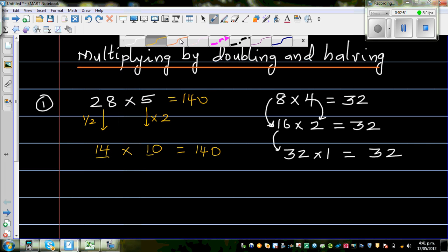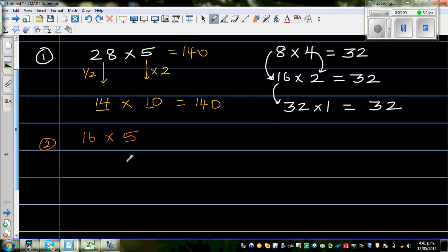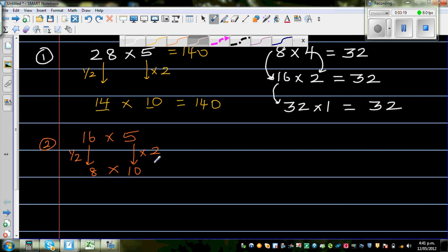So let us do one more question. The second question is 16 times 5. This is a very powerful strategy when you are doing with 5's. So I am going to double this. 5 times 2 is 10. So if you double this, you have to half this number. Half of 16 is 8. So both answers, this is 80. 8 times 10 is 80.